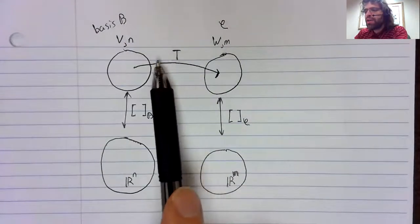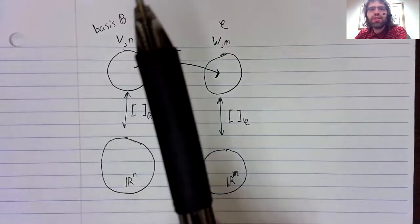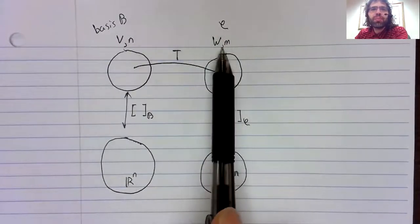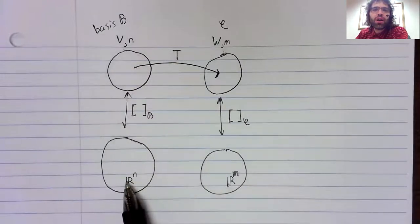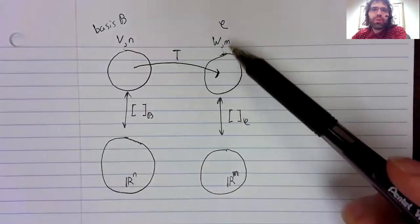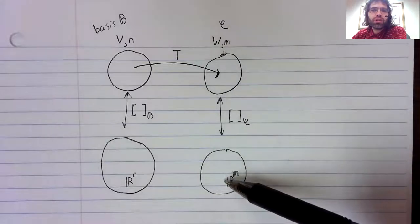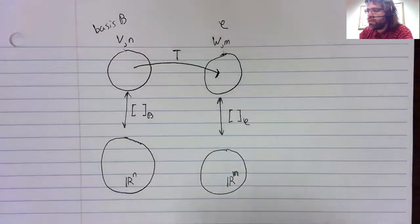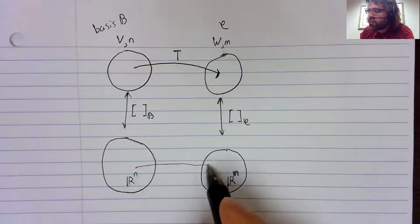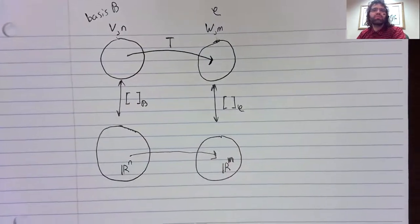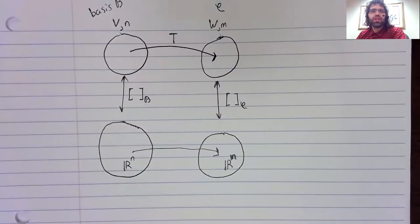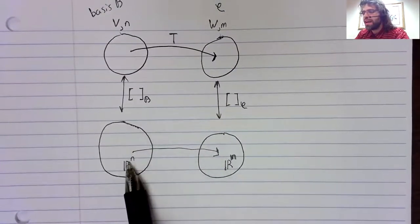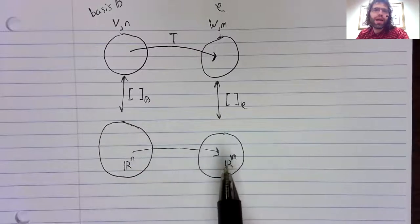If you have a linear transformation T from V to W, but V is identical to R^n and W is identical to R^m, then there ought to be a corresponding linear transformation from R^n to R^m.